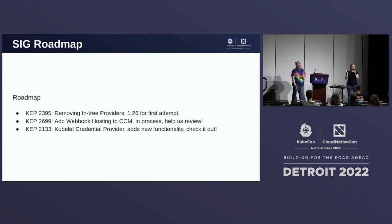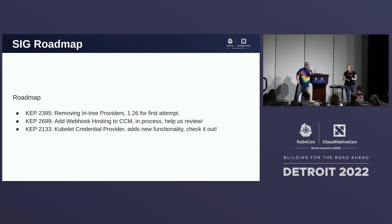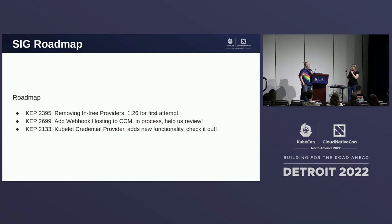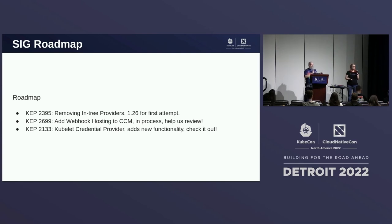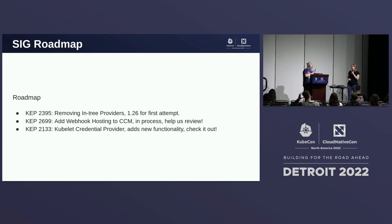We mentioned a big KEP at the beginning, but we have some other ones going on too. Two other KEPs: one in progress right now and one going into GA. And let's not forget KEP-2395 — it is worth repeating that we are going to try to remove the in-tree providers in 1.26. If the tests pass, when you upgrade to 1.26, those feature gates will be enabled by default, meaning the Kubelet will now be set to use external cloud providers. So be prepared for that.